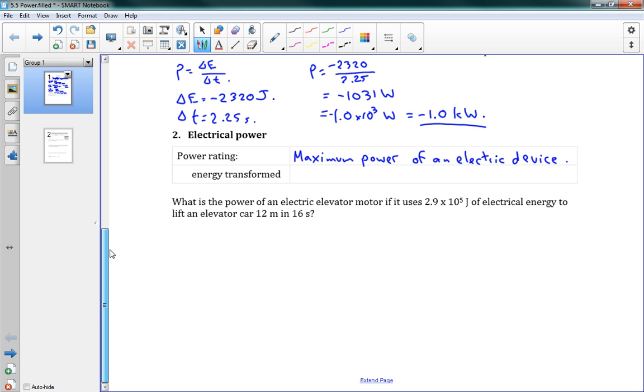Our energy transformed, we can have an equation for that from our previous equation. If we rearrange the power equation, we can get delta E is equal to power times delta T. So if it's operating at its maximum power for some amount of time, we can figure out how much energy it's consuming.